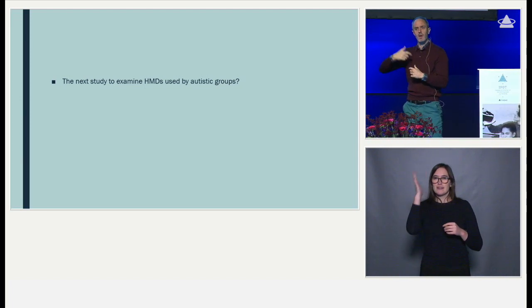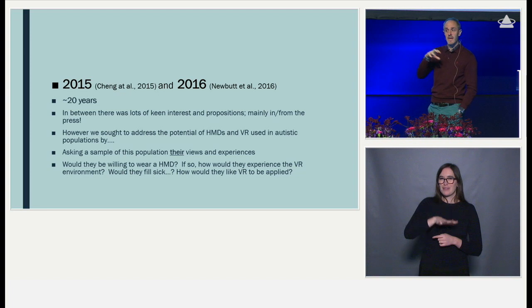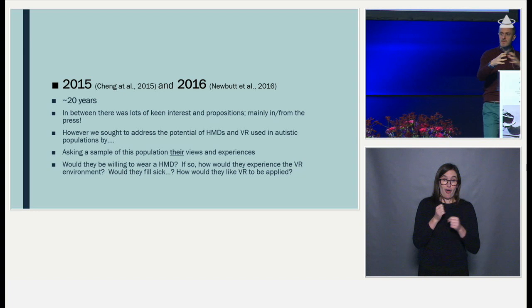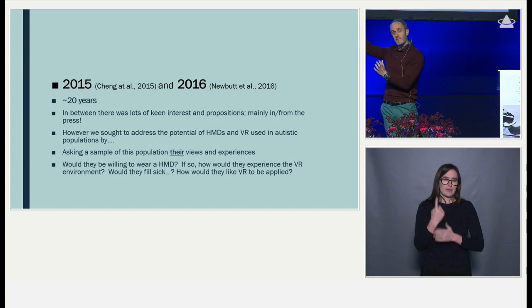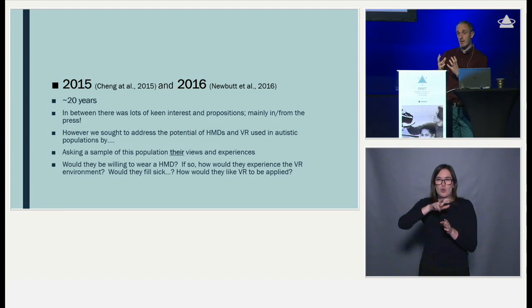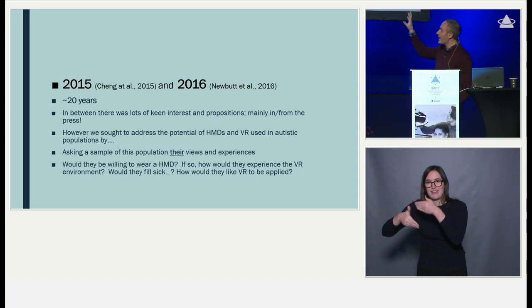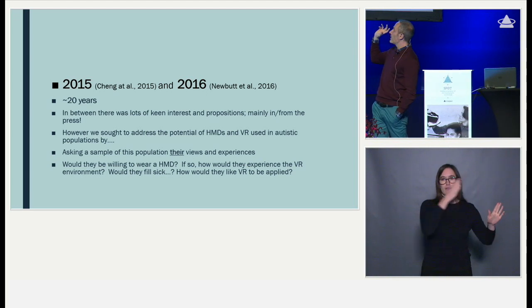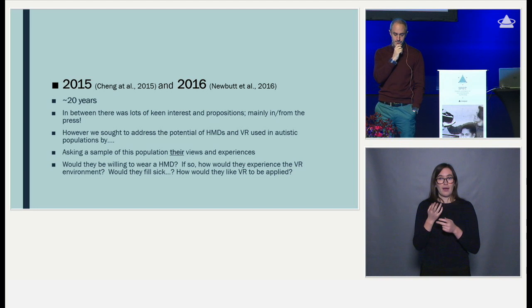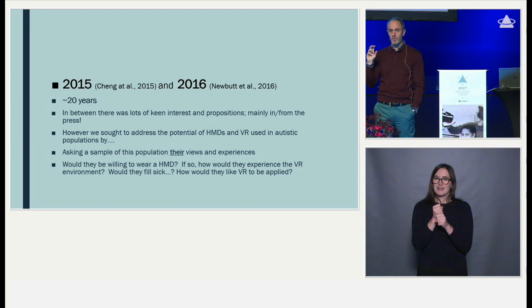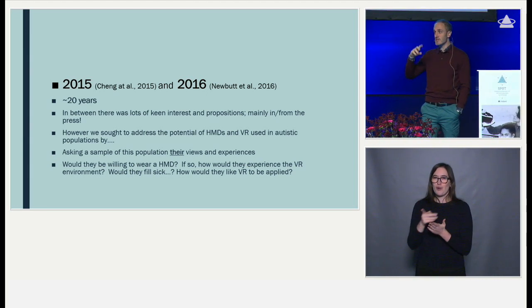The next published work building on that and looking at head-mounted display technologies with autistic individuals wasn't until 2015 and 2016 — so there's quite a big gap. That doesn't surprise many, because the technology was entirely unaffordable and lab-based. Around 2015 we start to see commercially available VR placed in the hands of researchers. In between, there was keen interest and propositions for use with autistic people, pushed mainly by the press in the UK, but no one was asking the autistic community whether they'd be willing to wear, use, or accept this technology.